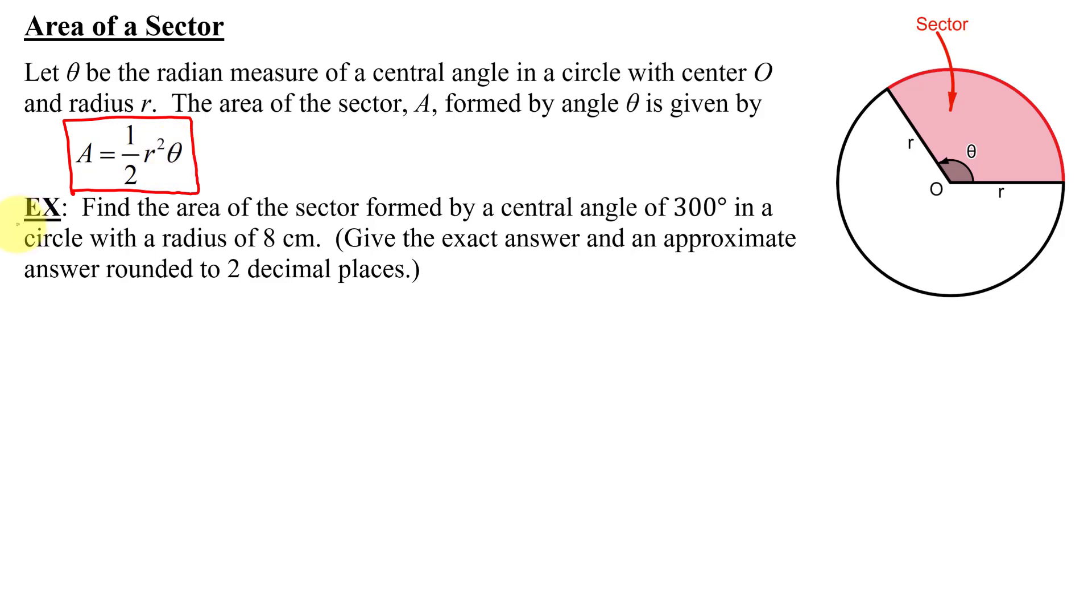Here's the problem that I need to solve. I need to find the area of the sector formed by a central angle of 300 degrees in a circle with a radius of 8 centimeters. I need to give the exact answer and an approximate answer rounded to two decimal places.